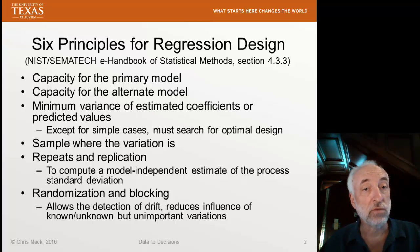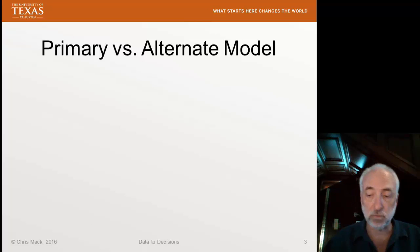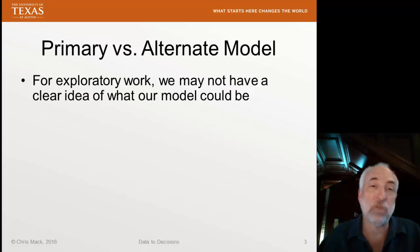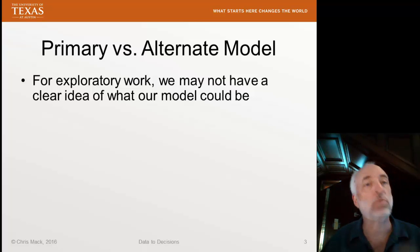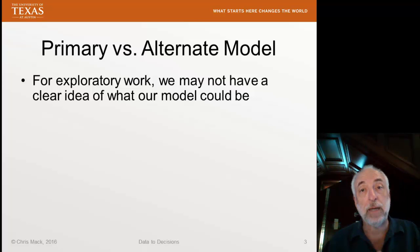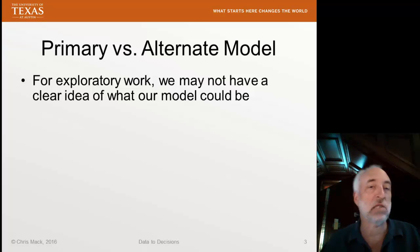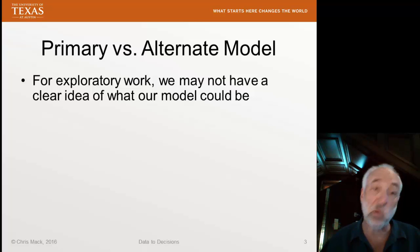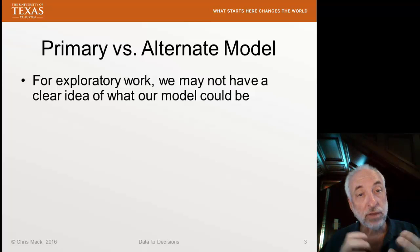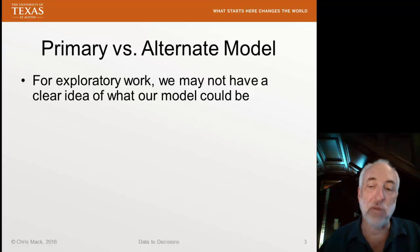The first two are the capacity for the primary model or the alternate model. Sometimes we're doing exploratory work. We don't really have a model in mind — we're going to go through the exercise of model building. In this case, it's hard to rigorously design our regression. We might have to do trial and error. If we don't have a model in mind, we're just going to use something like a space-filling design, evenly spreading our data points out over the range. But if we do have a model in mind, then we can design the experiment to be more effective for that model.